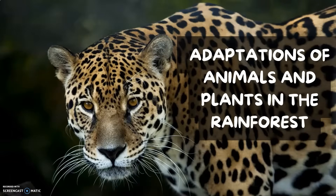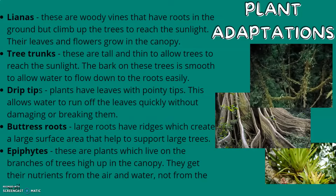Adaptations of animals and plants in the rainforest. Plant adaptations: lianas are woody vines that have roots in the ground but climb up trees to reach the sunlight. Their leaves and flowers grow in the canopy.